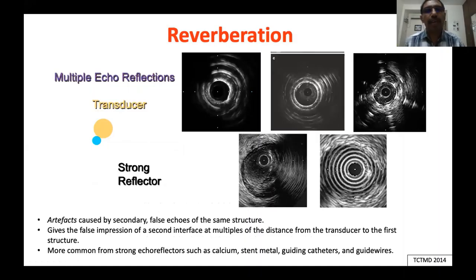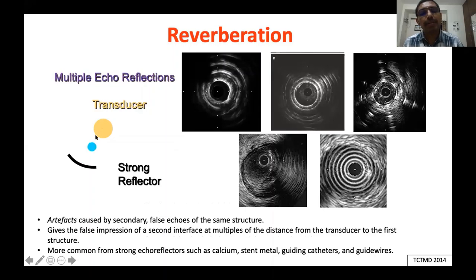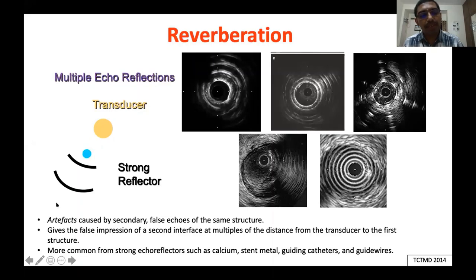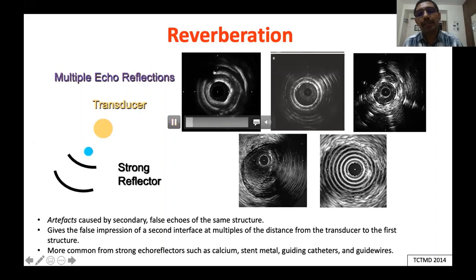Reverberation is nothing but repeated reflections between the catheter and a highly reflective surface, such as a metal stent strut or calcium. The system counts each reflection as having traveled additional multiples of the depth — if it travels twice, it appears at twice the distance, forming a ghost image; if three times, a ghost image at three times the distance. The clinical importance: you should not mistake these ghost images for different interfaces. One interface of calcium can produce reverberation of multiple interfaces — these are all ghost shadows.